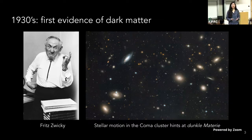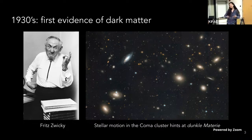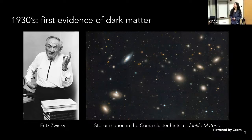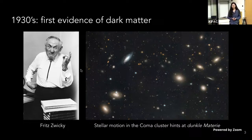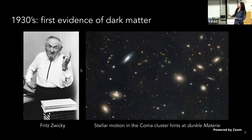The dark matter story starts in the 1930s, where a few people, including Fritz Zwicky, looked up in space and observed strange motions that they didn't expect. He looked at stellar motion in the Coma Cluster, and noticed that things were moving around in ways that didn't make sense given everything else he saw. So he concluded there's more matter than what we can see, and he called it dark matter — though not in English. At the time, people weren't ready to accept this concept, so we waited a few more years.